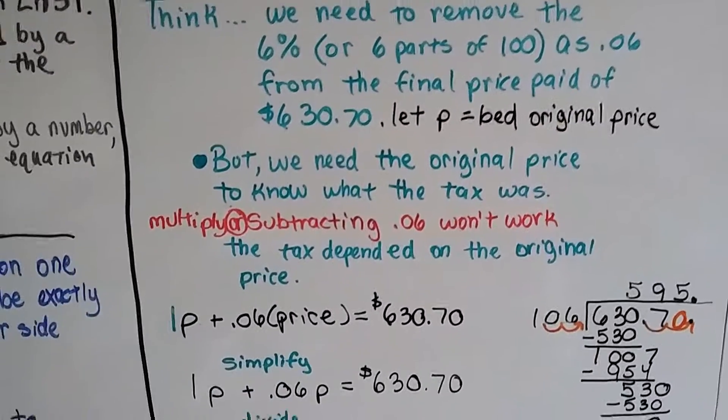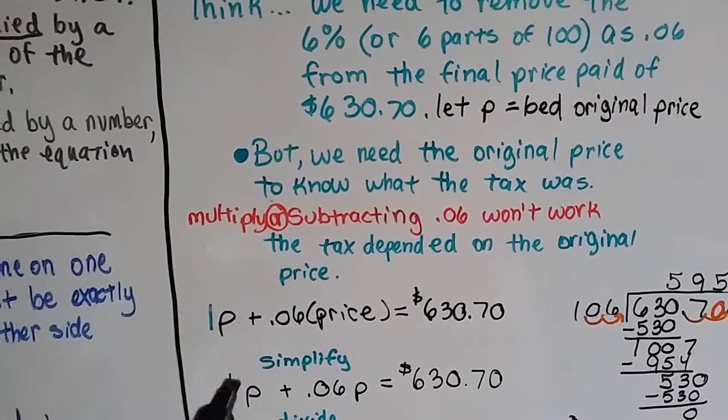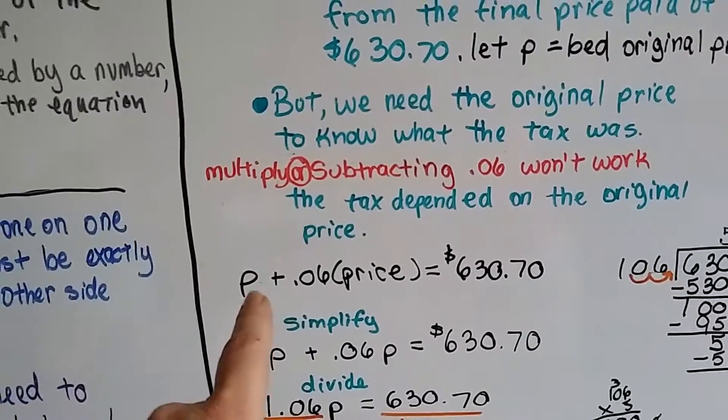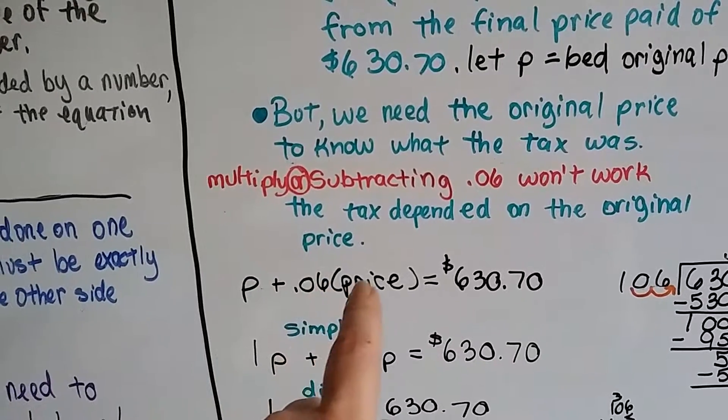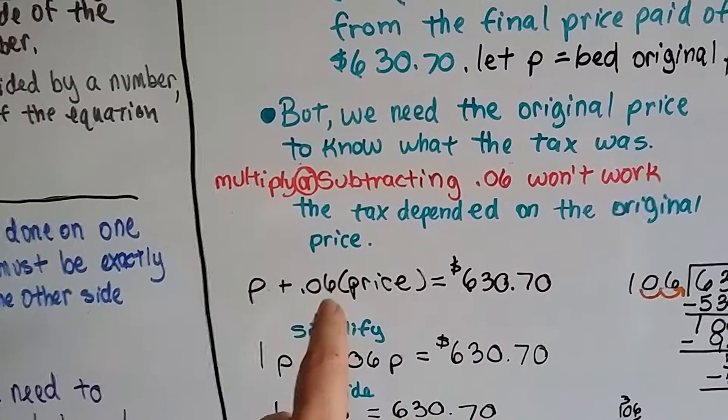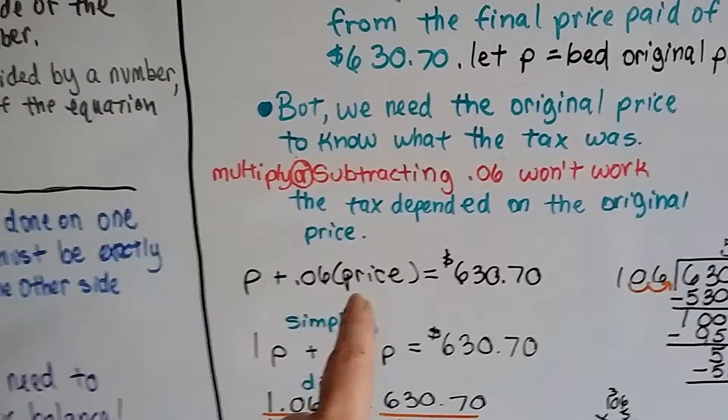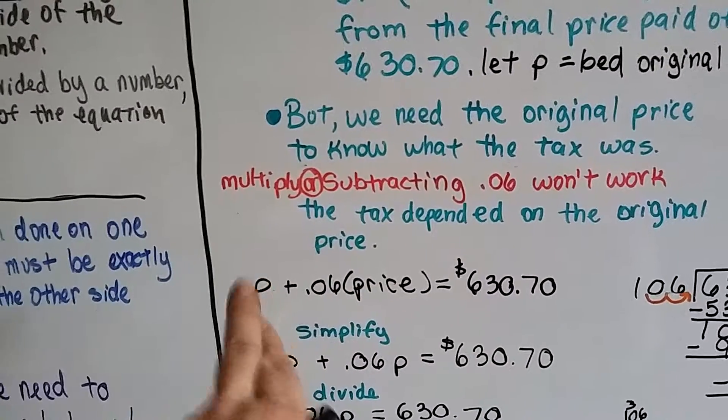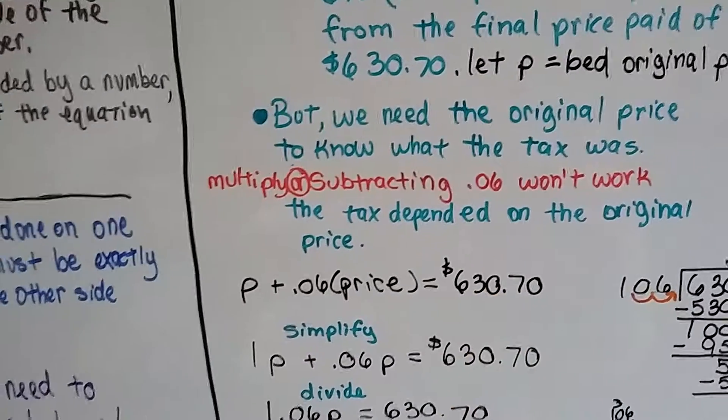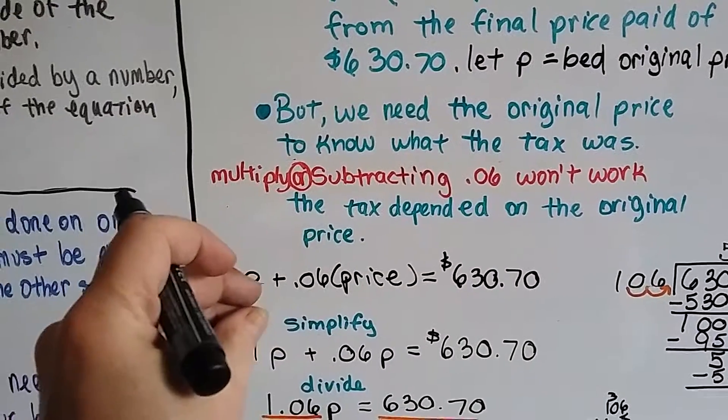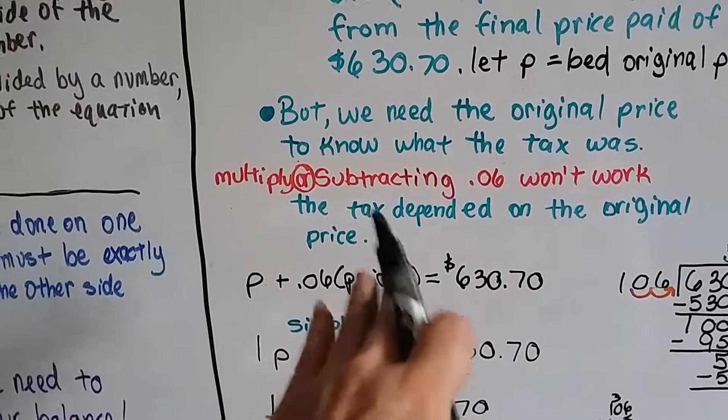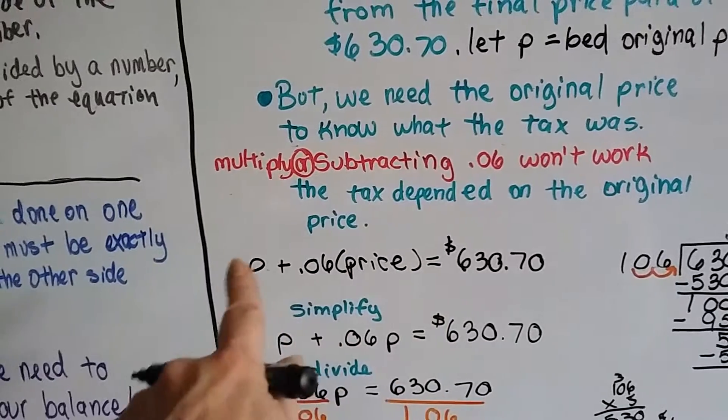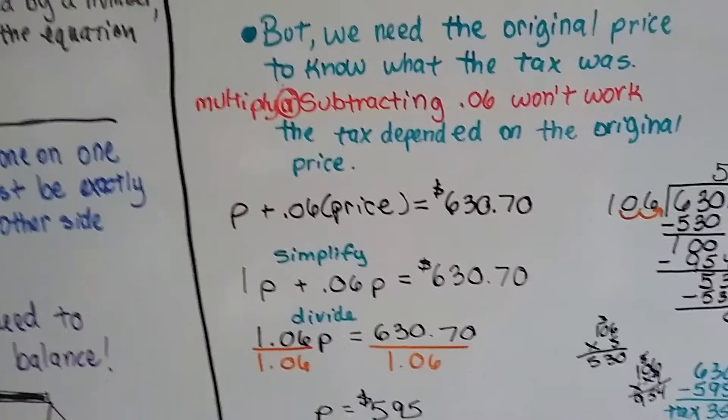But we need to come up with an equation to make it work. We need the price of the bed. Then we need to take the price of the bed and multiply it by the .06 to get whatever the sales tax is. Then we need to get that amount and add it to the price of the bed to get the total. Because that's the way it works. We have our thing that we're buying and then the amount of the sales tax, which is based on the amount of the thing we're buying. And then we get a total.